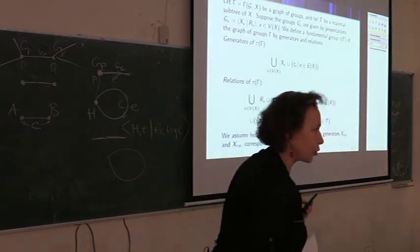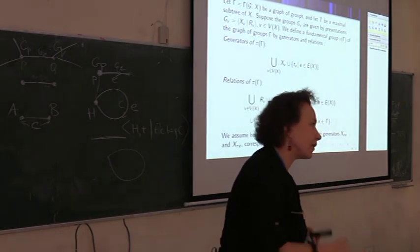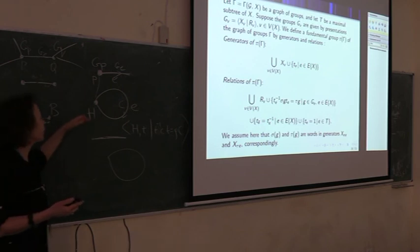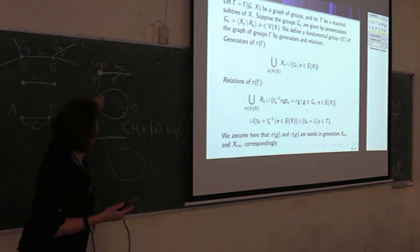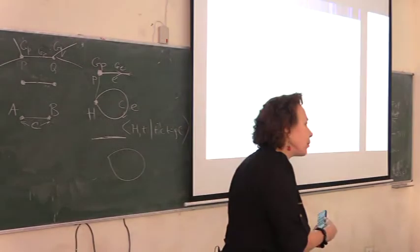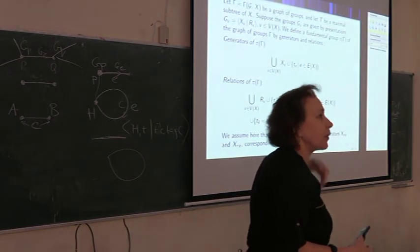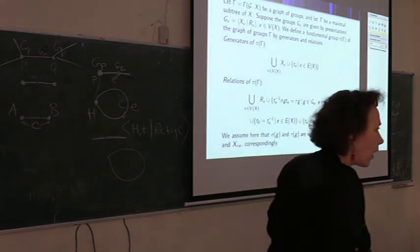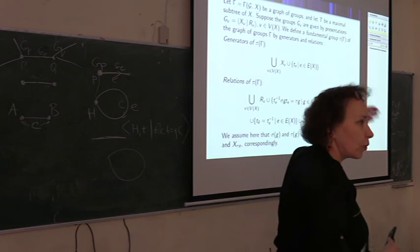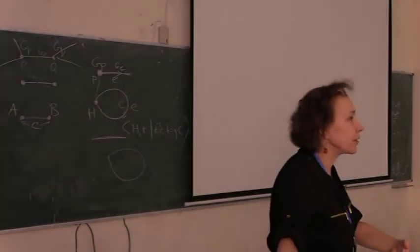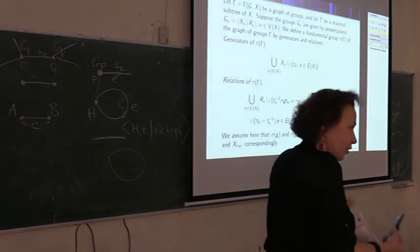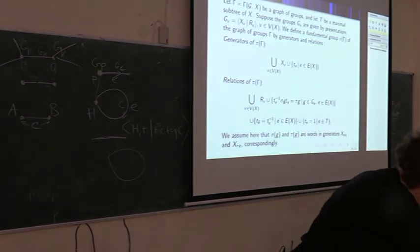I'd like to define the fundamental group of a graph of groups, which I'll start tomorrow. The fundamental group of a graph of groups that is a segment is an amalgamated product, and the fundamental group of a loop is an HNN extension. The fundamental group of a general graph of groups generalizes both. Next time I'll show that if a group acts on a tree without inversions on edges, then it is the fundamental group of the quotient graph of groups, and conversely. That's essentially the essence of Bass-Serre theory, which has nice applications.